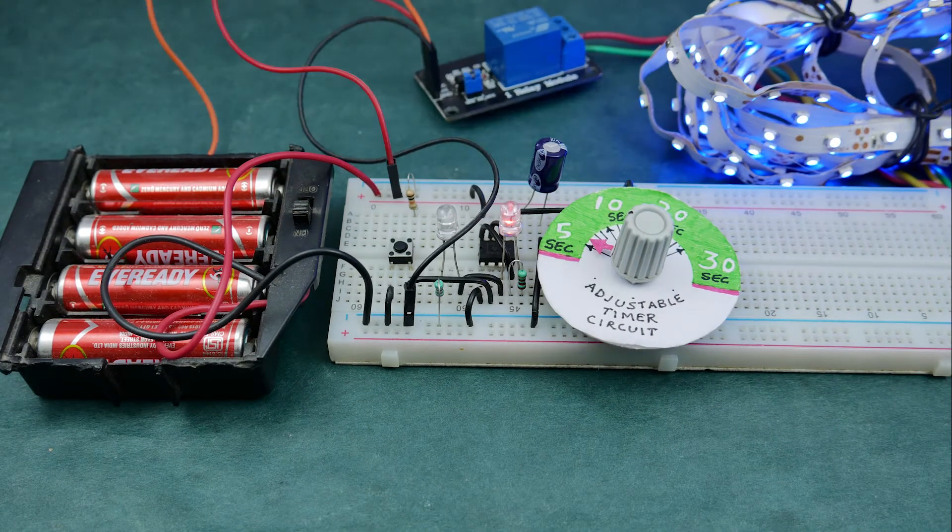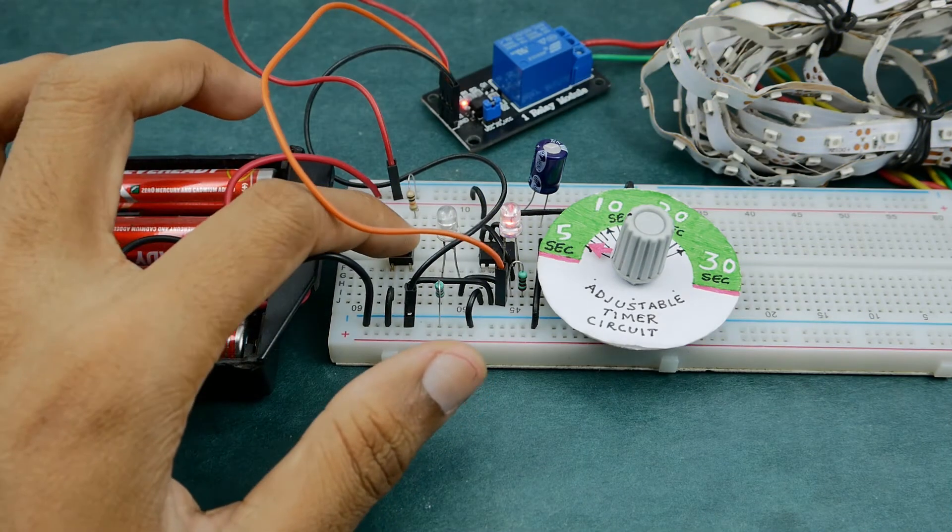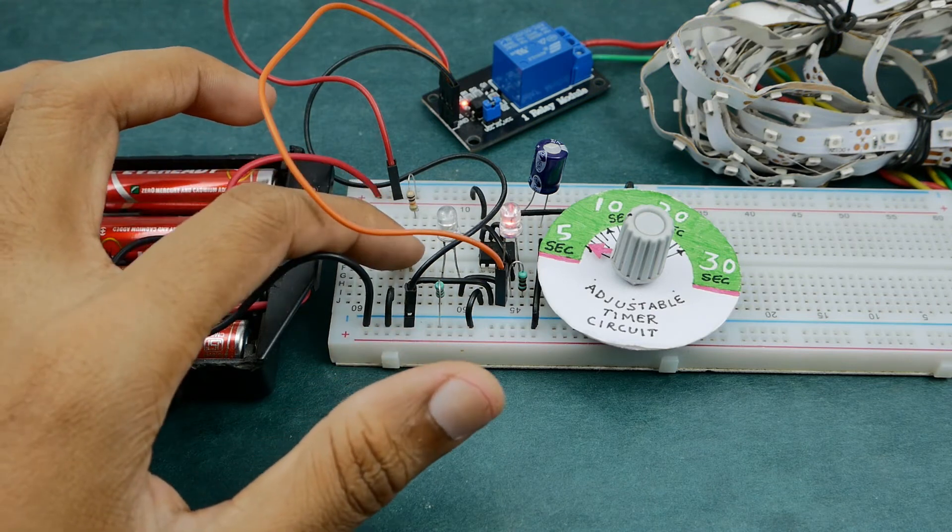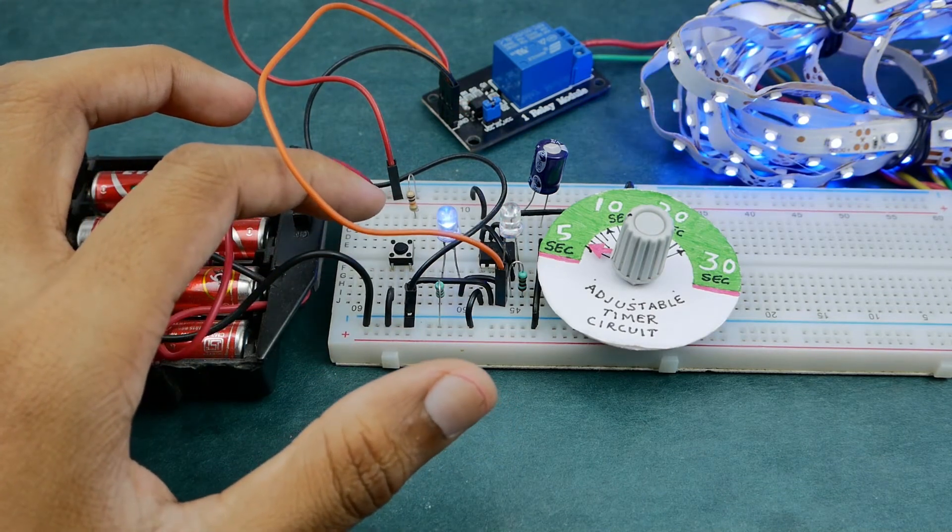And for controlling heavy loads or AC appliances, the circuit can be clubbed with a relay module. We'll also learn how the circuit works later in this video, so stay tuned.